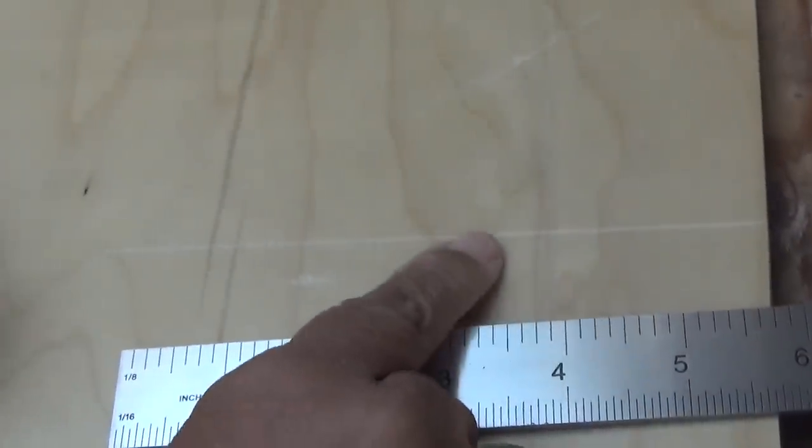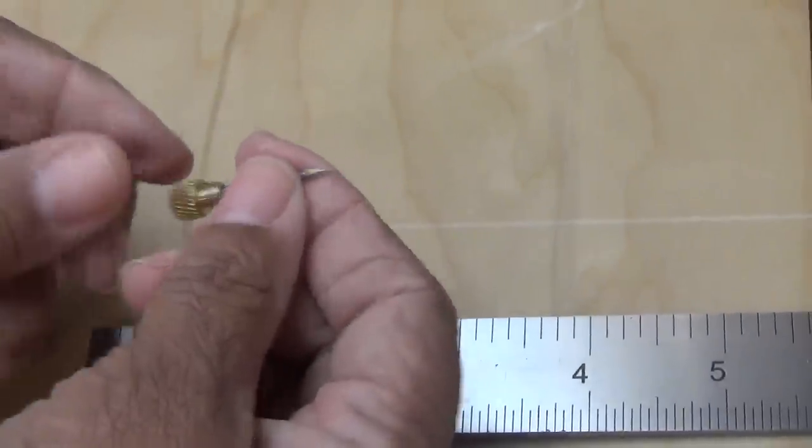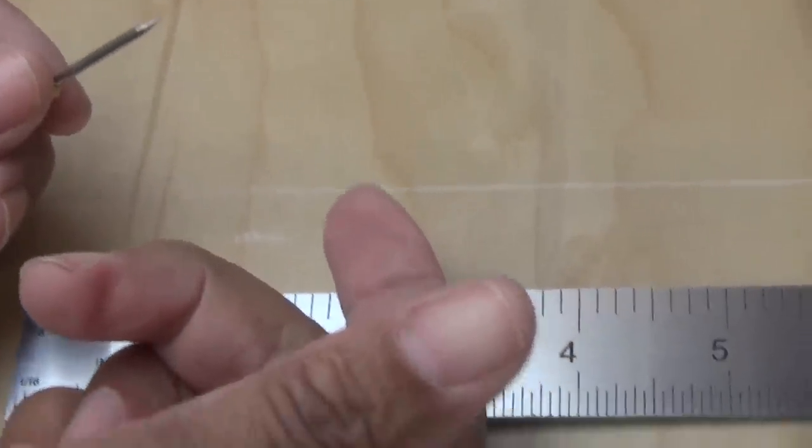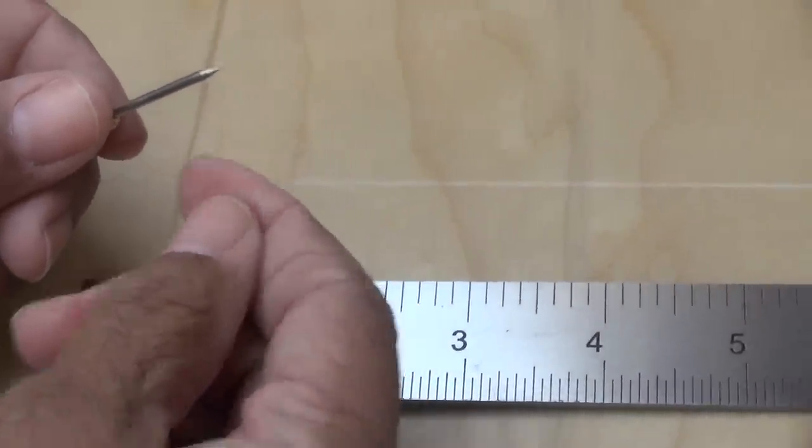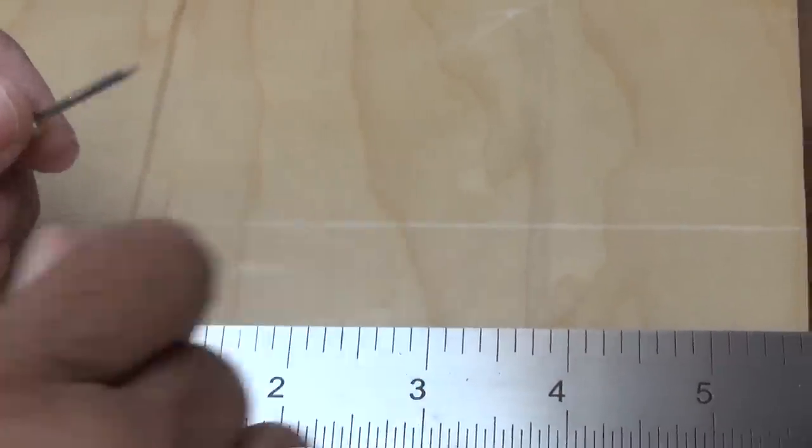So that's how you use the scribe tool that comes with your combination square in the event that you don't have a pencil or a marking knife handy.